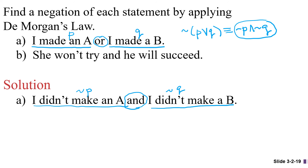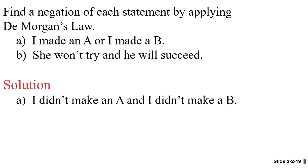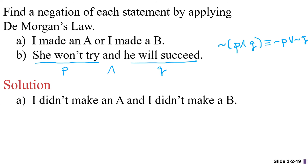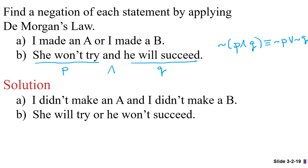Now let's look at the next statement: she won't try and he will succeed. So again we have two components — we'll call one P and we'll call one Q — joined with an and connective. So we're going to use the other DeMorgan's law, which says that when you negate a conjunction you get the disjunction of the negation of each component: not P or not Q. P was 'she won't try' so the negation will be 'she will try,' and Q was 'he will succeed' so not Q is 'he won't succeed,' and we're going to join it with an or. So we get: she will try or he won't succeed.